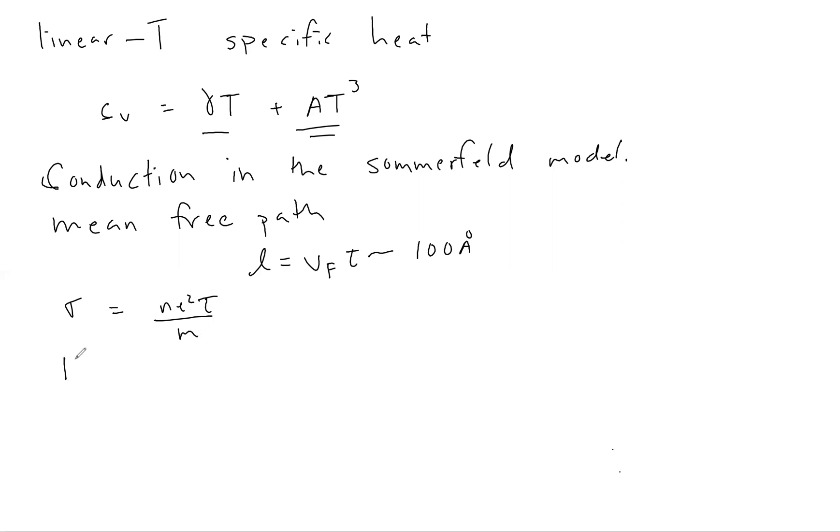If we're thinking about things like the mean free path, we should compute it in the Sommerfeld model as a product of the Fermi velocity times the relaxation time tau. In contrast to the classical approach where we got a value of order angstroms, now we'll get a result of order 100 angstroms or so. Still, the conductivity sigma is n e squared tau over m. Nothing about the Sommerfeld model changes that. Indeed, we still don't have a good theory for why this relaxation time tau comes about in the first place. When we think about the thermal conductivity, our earlier Drude result is still true: kappa is 1/3 v squared tau cv.